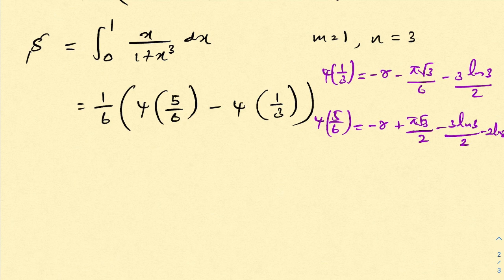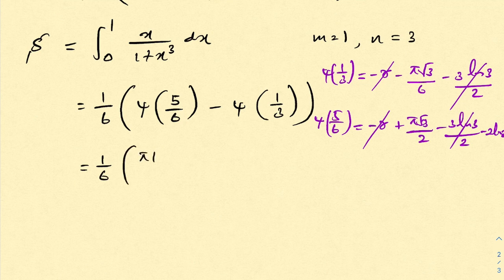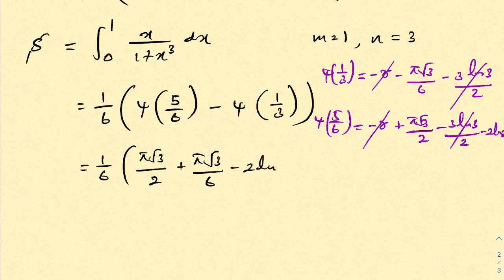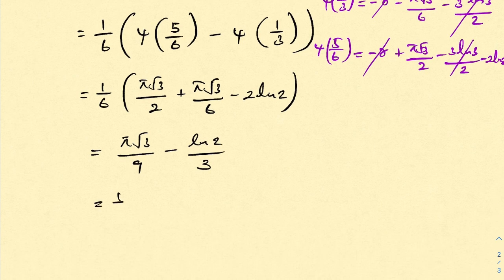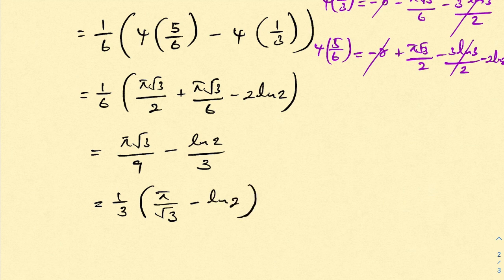If we subtract these, the Euler–Mascheroni constant gamma cancels, and some log terms also cancel. We get 1 over 6 times the quantity 5 times square root of 3 over 2 plus pi times square root of 3 over 6 minus 2 times natural log of 2. Simplifying further gives pi times square root of 3 over 9 minus natural log of 2 over 3, which we can write as 1 over 3 times the quantity pi over square root of 3 minus natural log of 2. This is our answer. If you like this type of video, please subscribe to this channel. Thank you for watching.